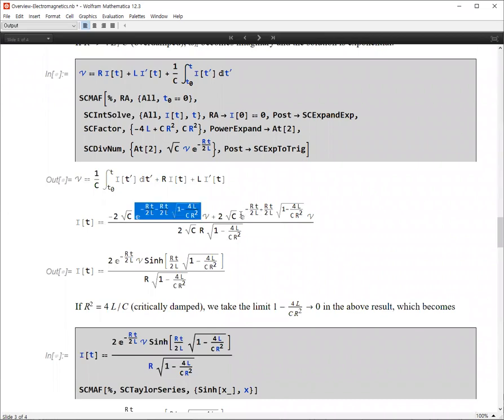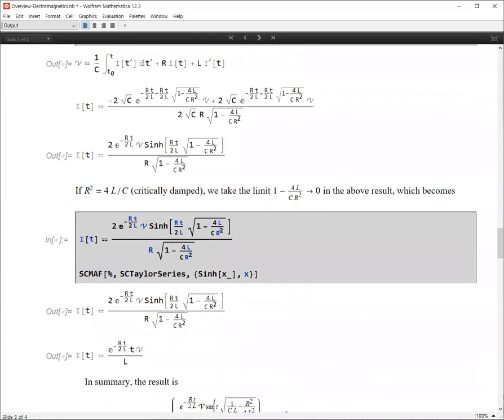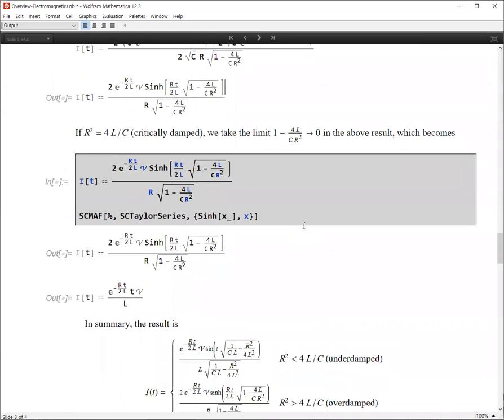And they can be combined to give hyperbolic sine to match the initial condition at t equal to 0. When R squared is exactly equal to 4L over C, then this is a critically damped case. And the result is given here.